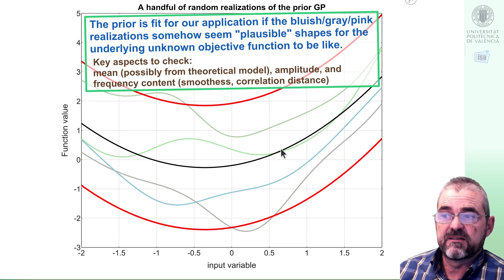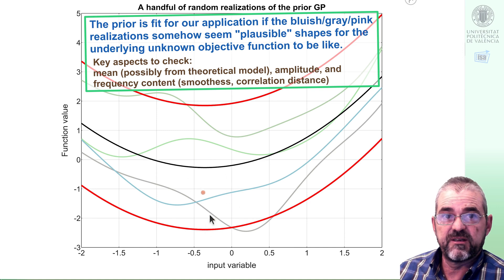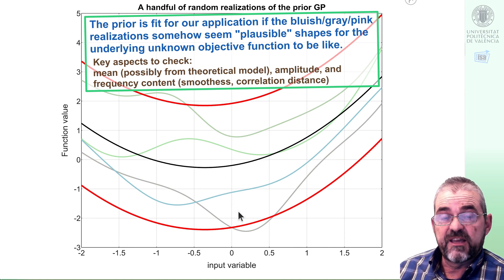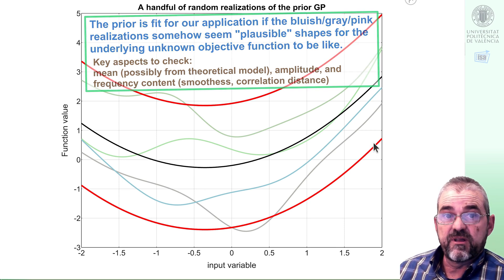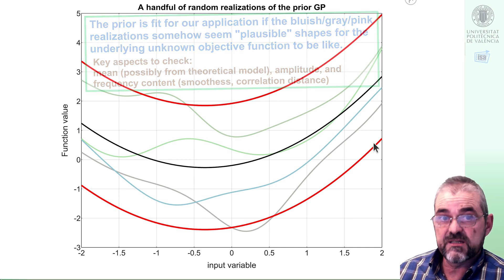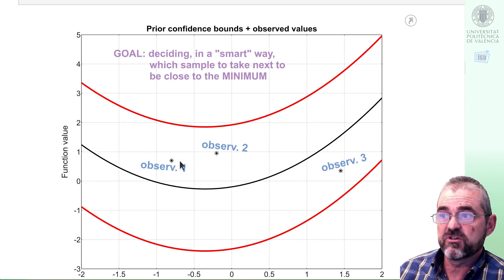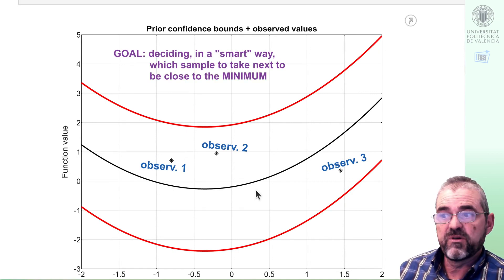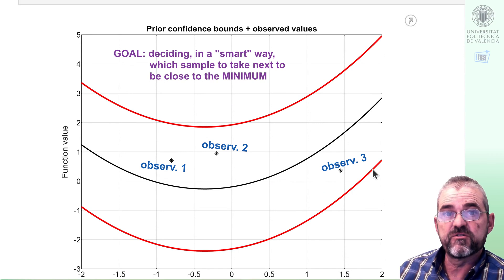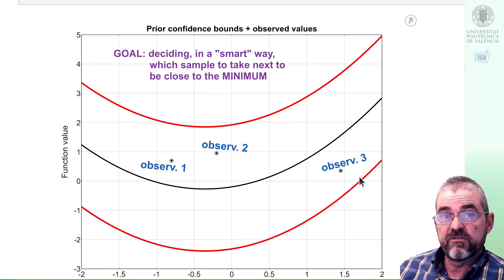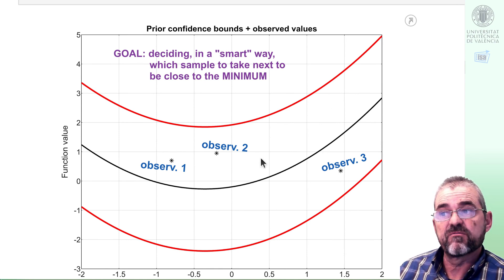In here, basically the optimal will be around here, but in actual experimental optimization our true ground truth function is one of those and we progressively increase our information on which one is it as we gather experimental samples. So if we measured these points at three different abscissa values, then from all the random functions in this family we need to select only the ones that pass through the measurement points.